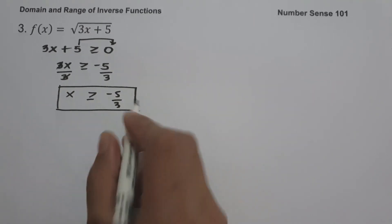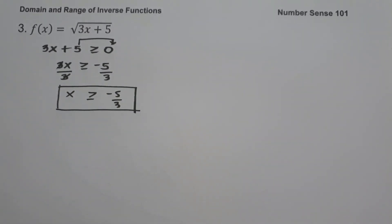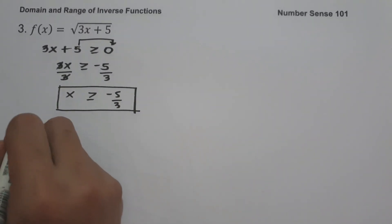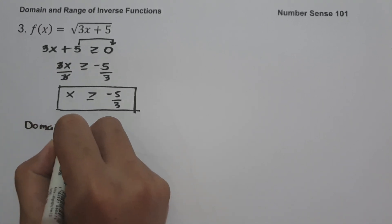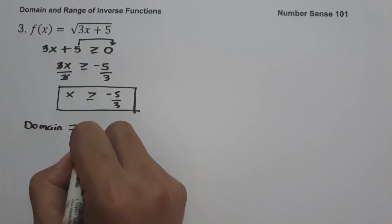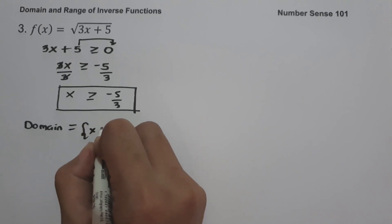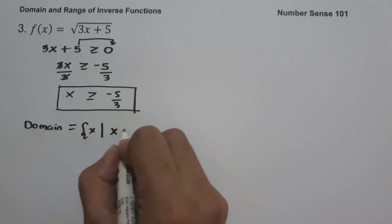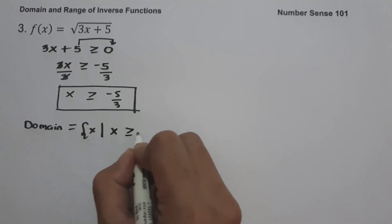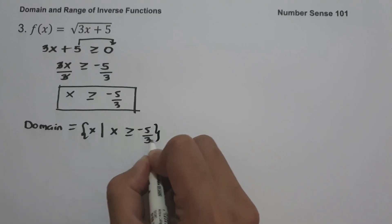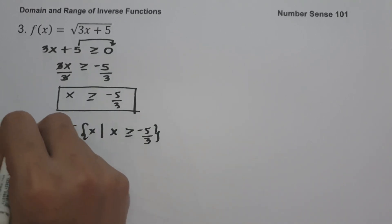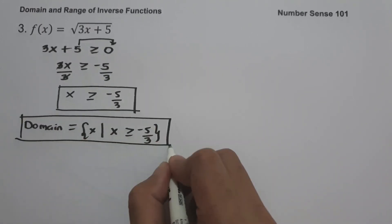So the domain is the set of x values such that x is greater than or equal to negative 5 over 3. This will be our domain.